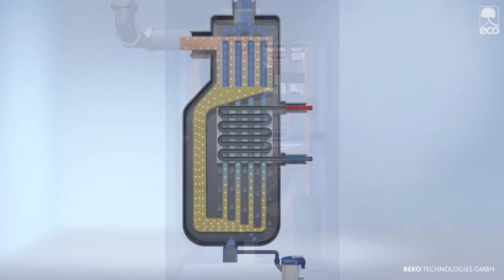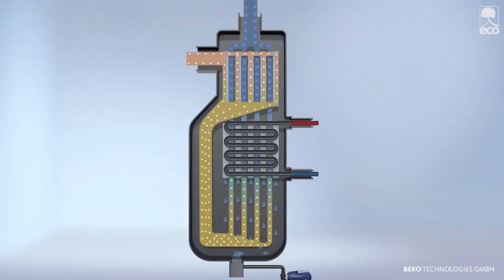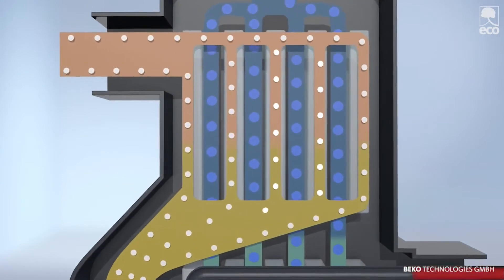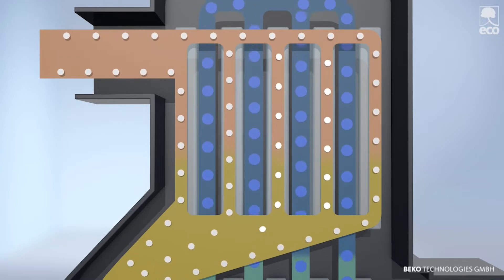Humid compressed air, shown in blue, enters the heat exchanger at the top at about 35 degrees Celsius. There it is pre-cooled in a counter-current process by already dry and cooler air.